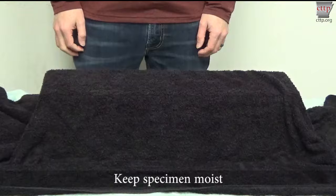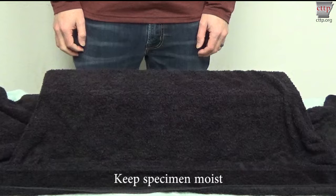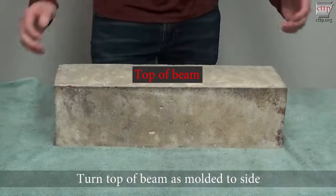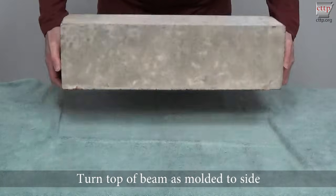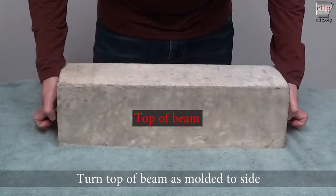Remove the specimen from moist storage and keep it moist. Turn the beam so that the original top portion of the beam in the mold is now on its side.